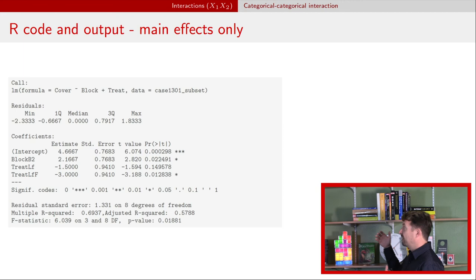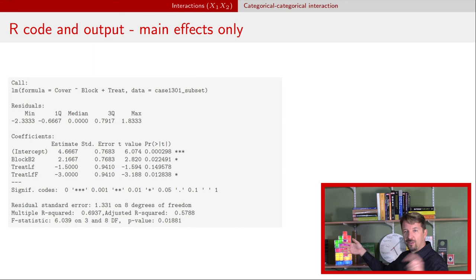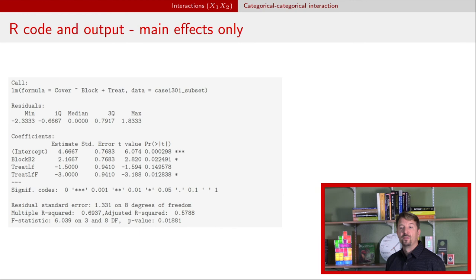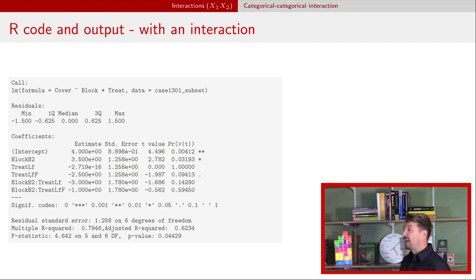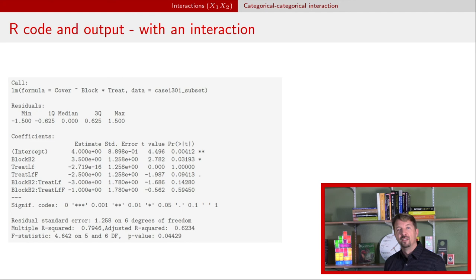In R, to fit the main effects model, use the plus sign; you'll see four lines corresponding to the intercept beta-naught, the coefficient for block two, and coefficients for treatments LF and LFF. For the interaction model, use the asterisk; this adds two additional lines for the interaction: block-B2 colon treatment-LF and block-B2 colon treatment-LFF.